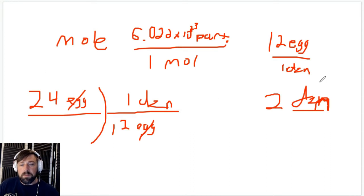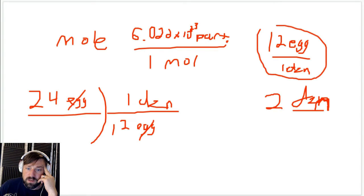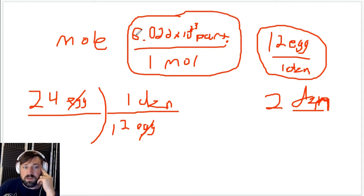That is going to be our process to go through and figure out moles to particles or moles to atoms. Except instead of this equivalent statement, 12 eggs and one dozen, we're going to use this equivalent statement here, which is Avogadro's number, particles per mole. That is going to be our first step. So let's go through and just put this into practice. Let's say I have three moles of helium.